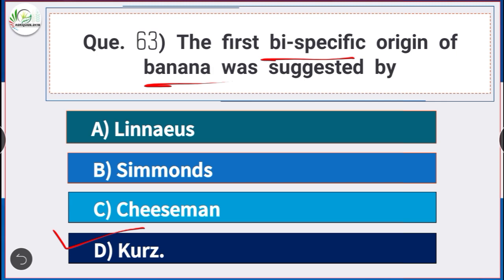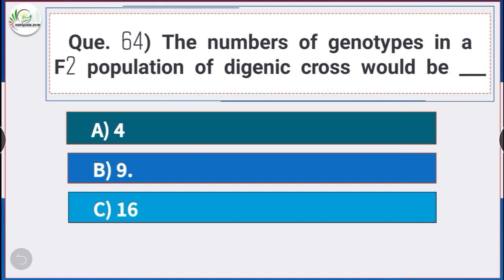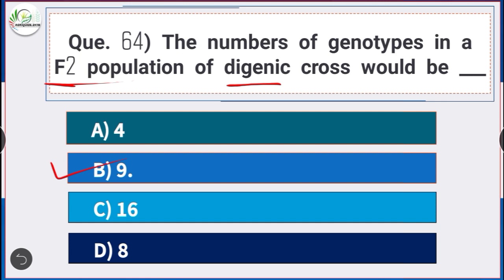Question number 64: The number of genotypes in the F2 population of digenic cross would be — answer option B — 9. The number of genotypes in an F2 population of digenic cross would be 9.